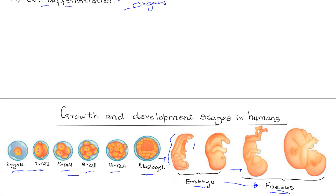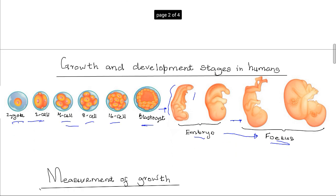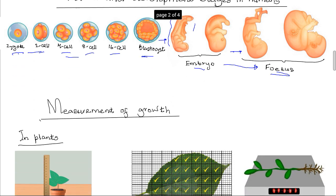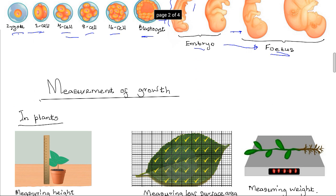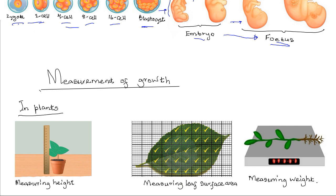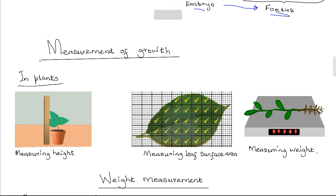In plants, growth occurs in specific areas — so growth is localized — but in animals, growth is generalized, that is, it occurs all over the body. How do we measure growth? How do we show that growth has taken place? Growth can be measured at various levels of the organism: it can involve the growth of cells, tissues, organs, or the entire organism.